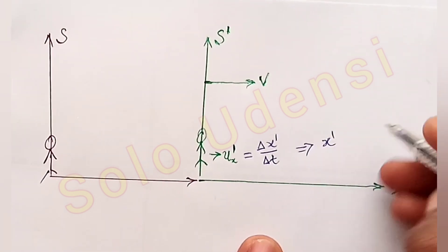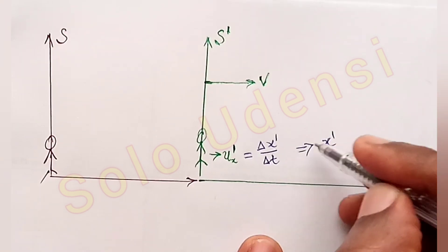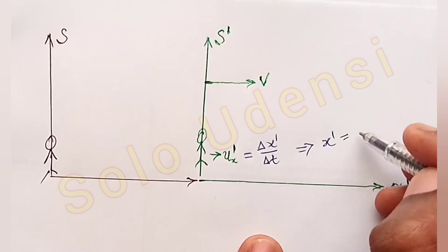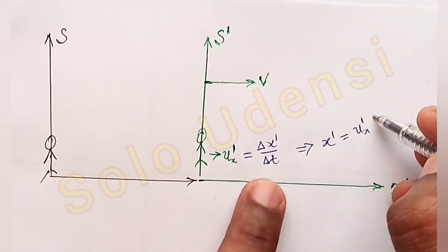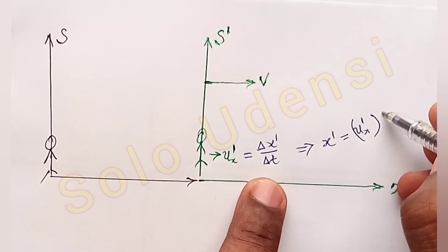Therefore, the coordinate X', if you like, is Ux' times T.